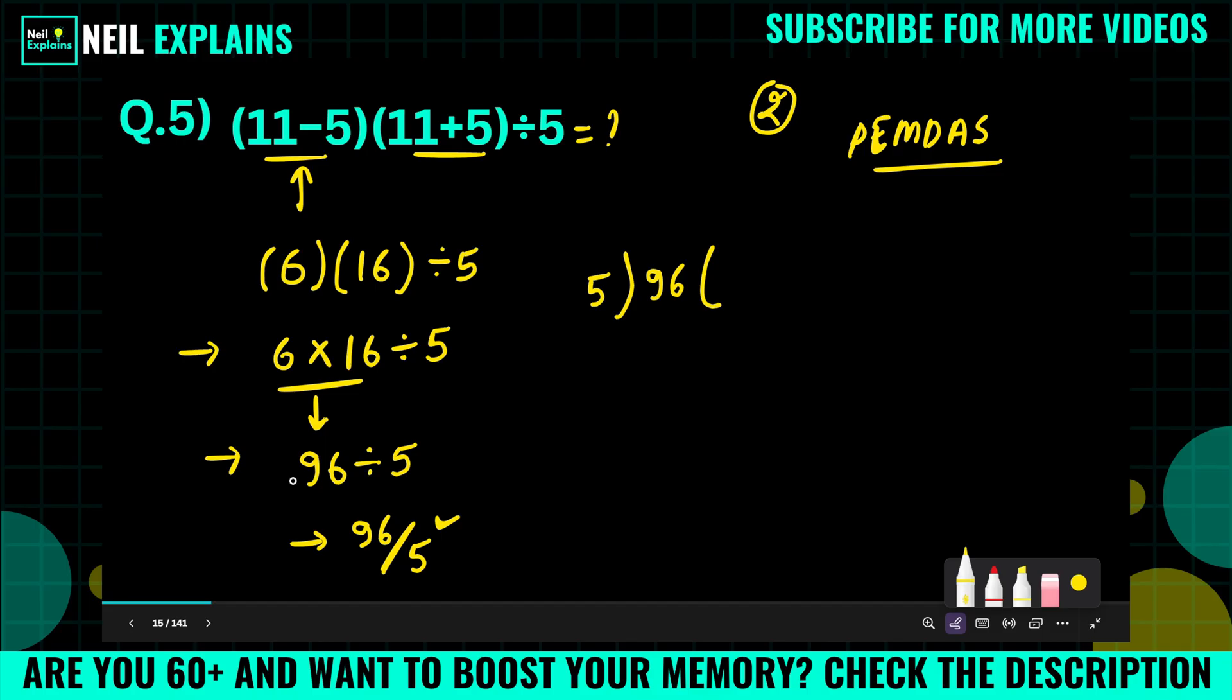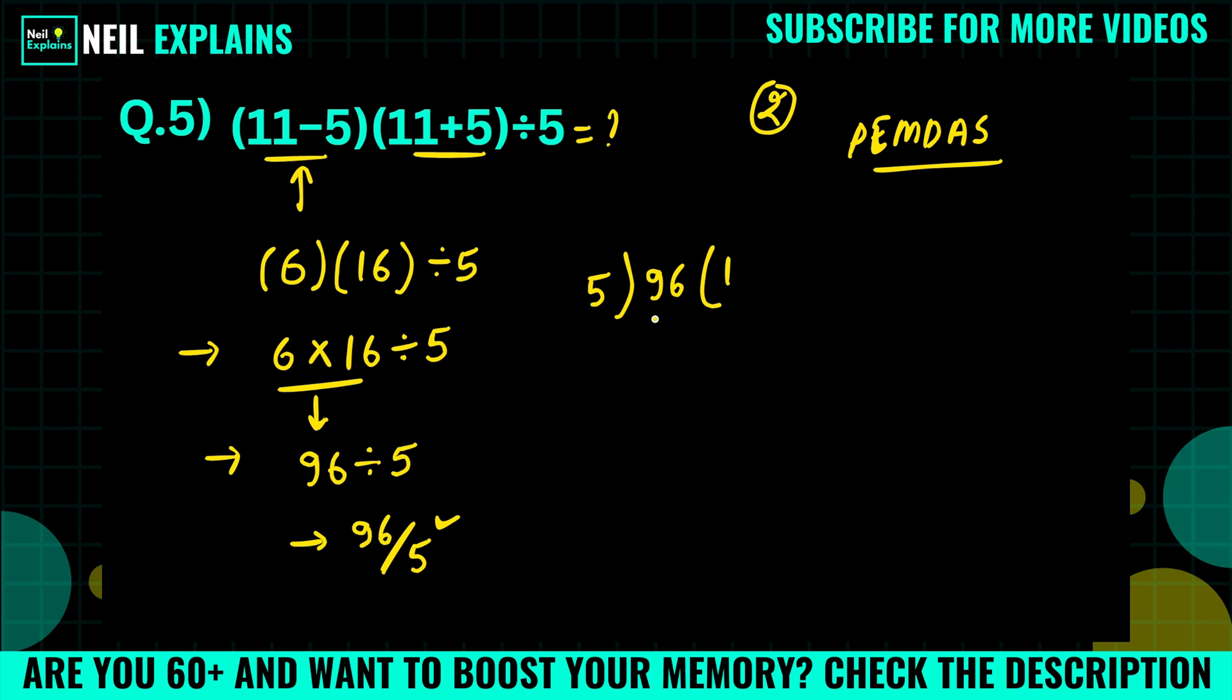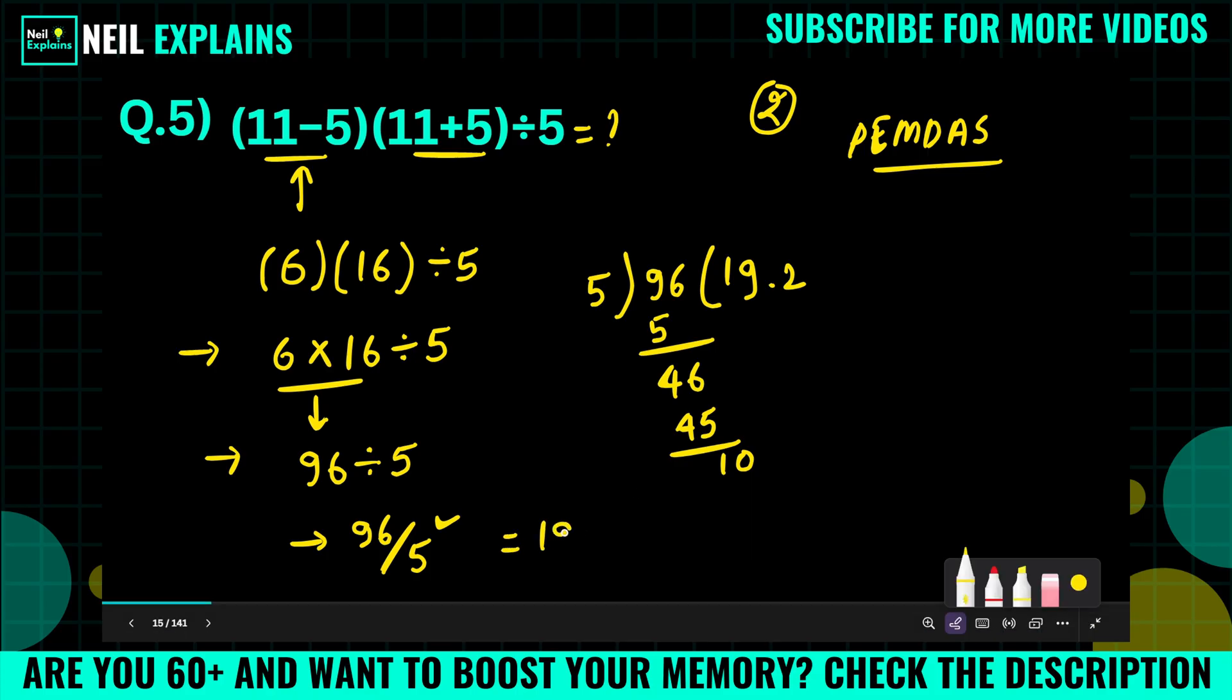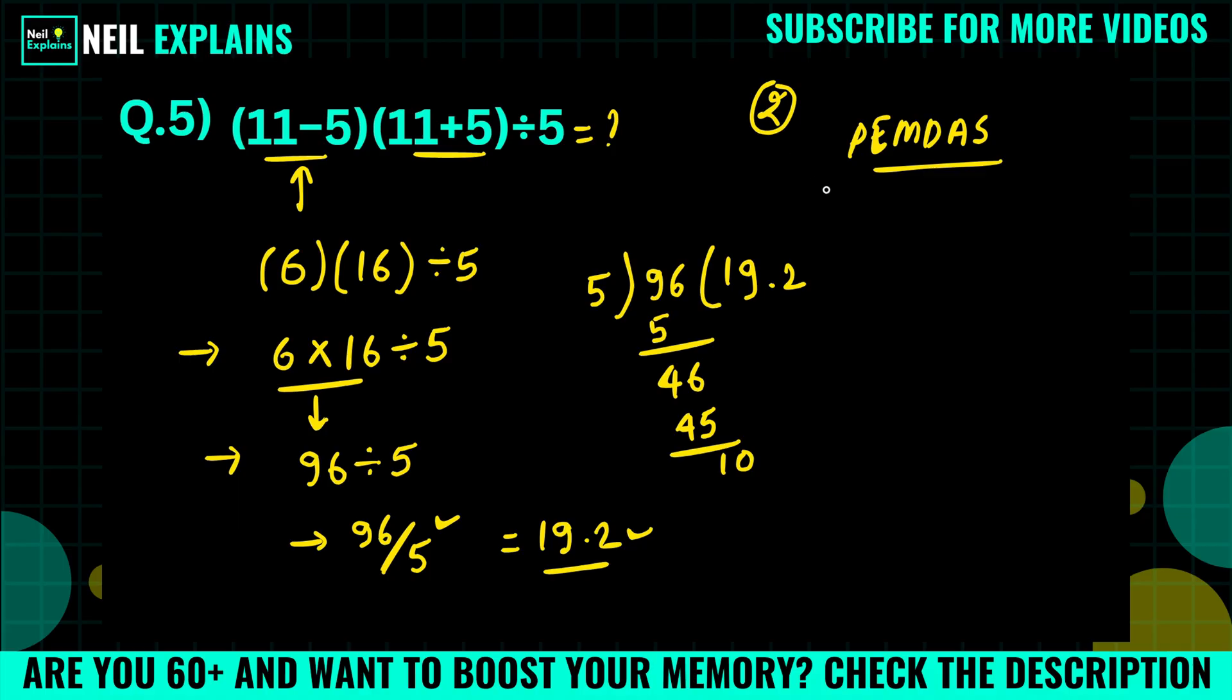So we can divide 5 into 96, or we can simply write 96 divided by 5 as answer, whatever you like. So here 5 times 19 point... the actual answer in decimal form is 19.2.